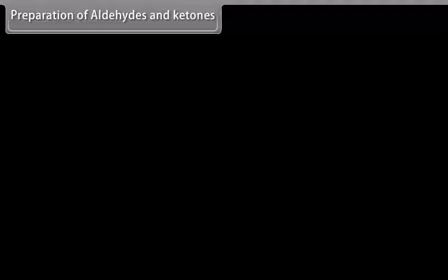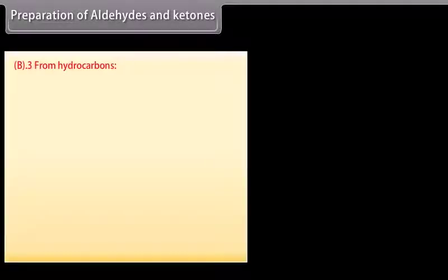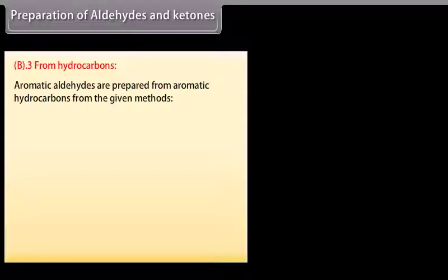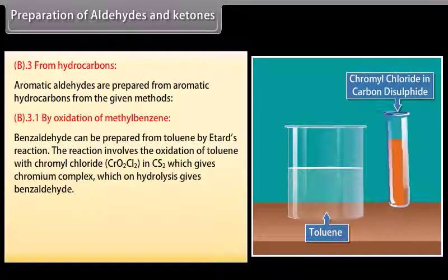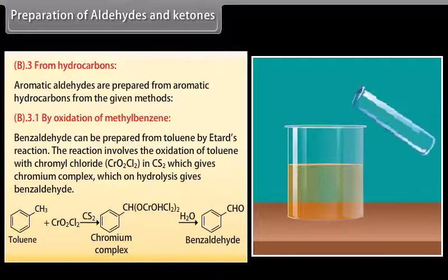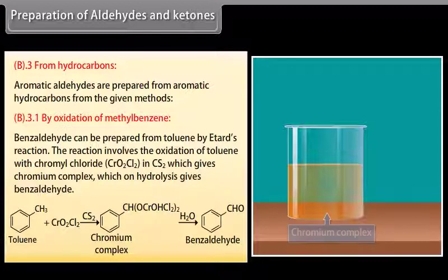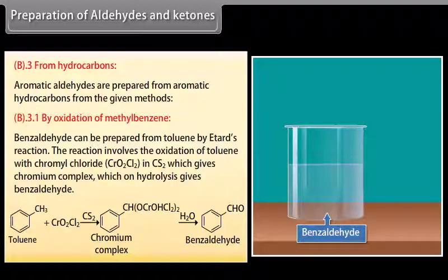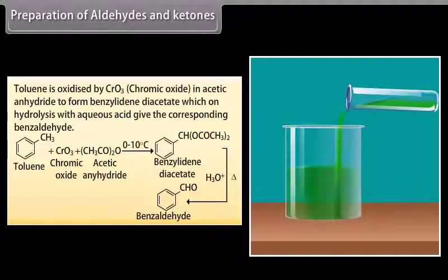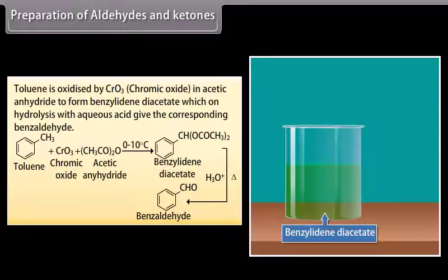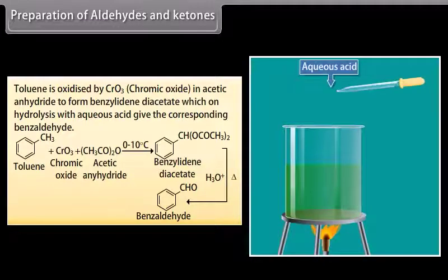Aromatic aldehydes are prepared from aromatic hydrocarbons by the following methods. By oxidation of methylbenzene: benzaldehyde can be prepared from toluene by Etard's reaction, involving oxidation with chromyl chloride in carbon disulfide to give a chromium complex, which on hydrolysis gives benzaldehyde. Toluene is also oxidized by chromic oxide in acetic anhydride to form benzylidene diacetate, which on hydrolysis with aqueous acid gives benzaldehyde.